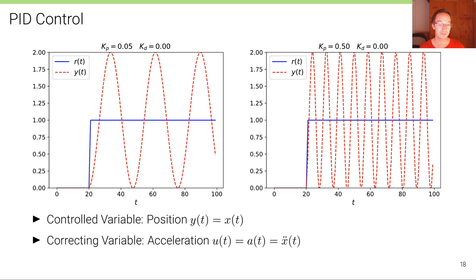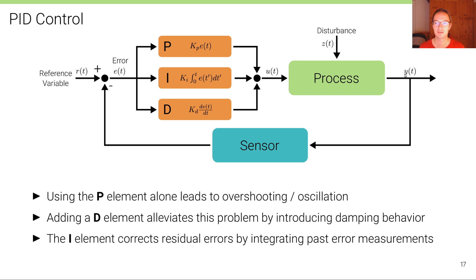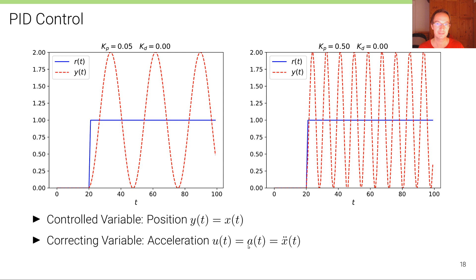In order to move the car, we can't directly modify the position — we can only apply forces to the tires, which means we can only apply acceleration effectively. So the correcting variable u(t) — the input to the process — is the acceleration, and y(t) is the position, where the acceleration is of course the second time derivative of the position. This system is essentially just a double integrator that takes the value u, integrates it twice, and outputs y.